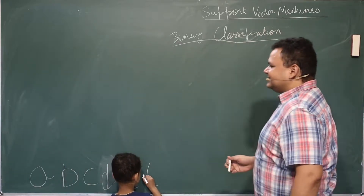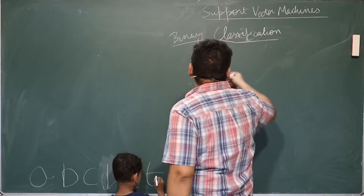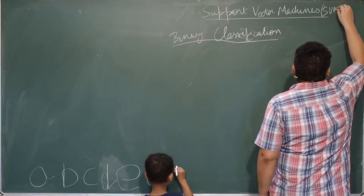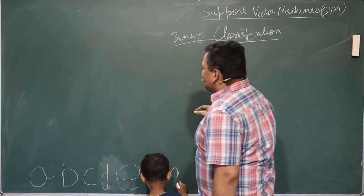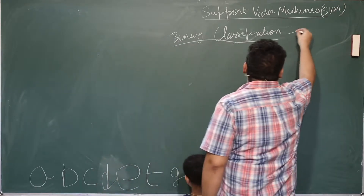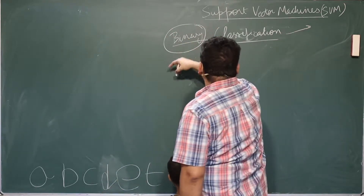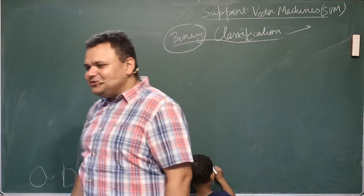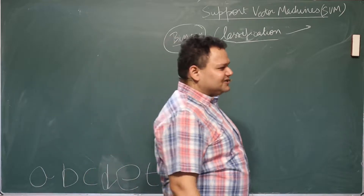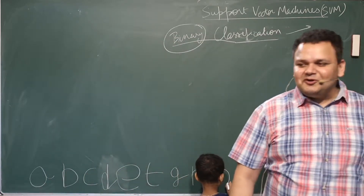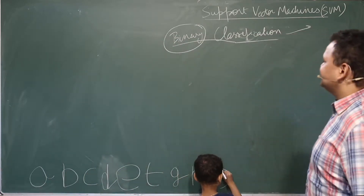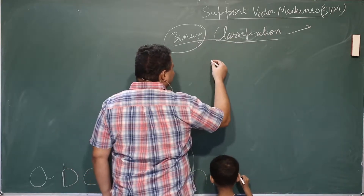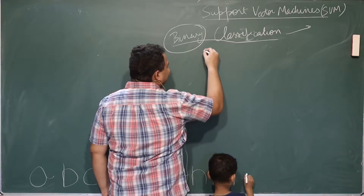Let us start with something preliminary to support vector machines. You might have heard of this term previously — they are called SVMs. This can be extended to other kinds of classification, so this is not the only possibility. In the case of support vector machines you can do an extension to do non-binary classifications which have multiple classes. Let us first talk about the preliminaries of this.